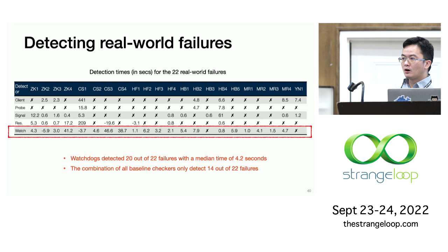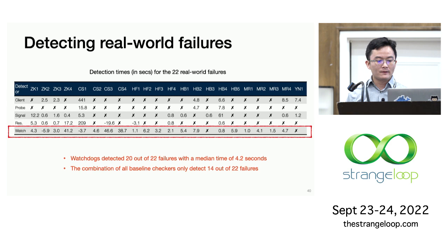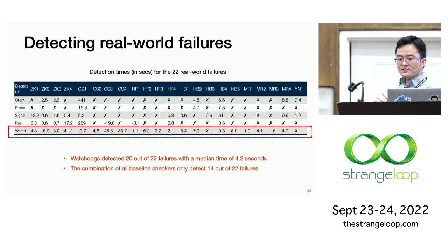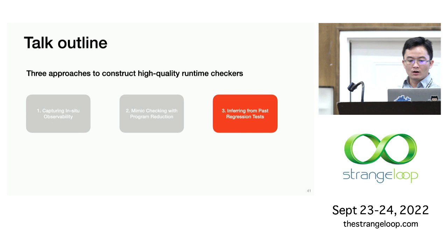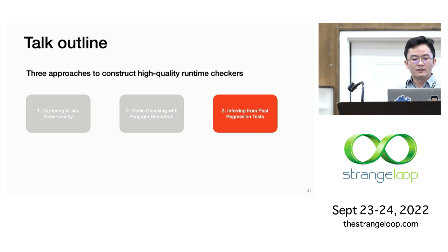Overall, the watchdogs can detect 20 out of the 22 failures with a median detection time of around 4.2 seconds. In general, the watchdogs are effective for catching liveness issues like indefinite blocking operations and safety issues that trigger explicit error signals, but they are less effective for some silent correctness errors. For the baselines, even the combination of all baseline checkers can only detect 14 failures. Since the watchdog as well as the other solutions are ineffective for silent failures, in the last part of this talk we're going to tackle this problem of silent failures, which is the most challenging subcategory of gray failures.